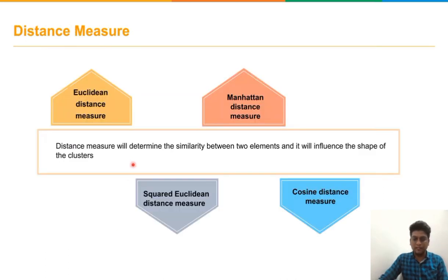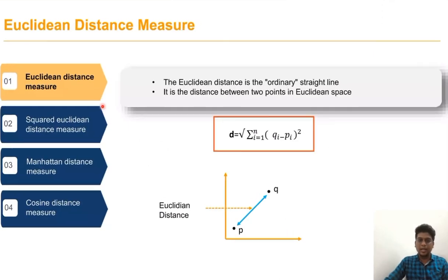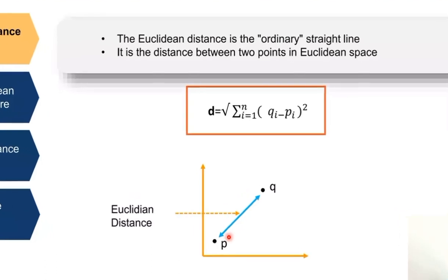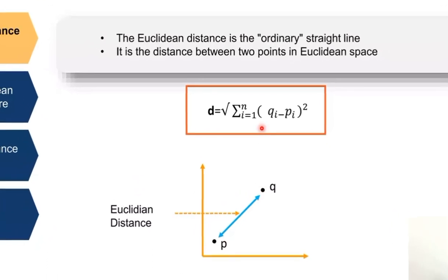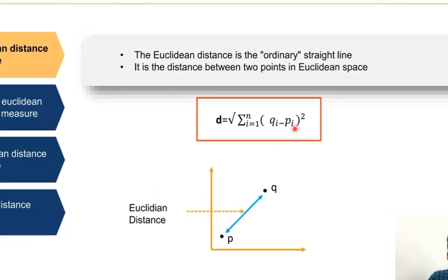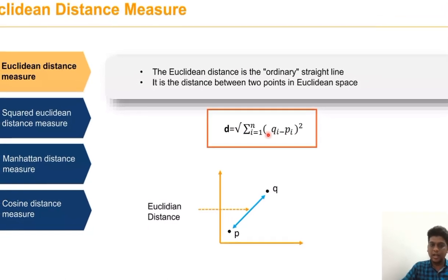For distance measure we are using Euclidean based distance. Euclidean distance method is an ordinary straight line distance between two points. This is the equation to find out the value of distance between two points.